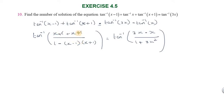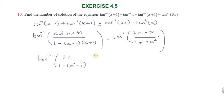Here, minus 1 and plus 1 cancel, so we simplify to get tan inverse of 2x divided by (1 minus x squared), which equals tan inverse of 2x divided by (1 plus 3x squared) after combining with the remaining tan inverse of x term.